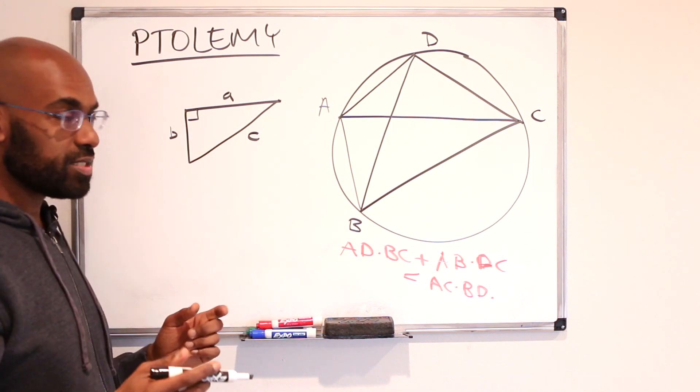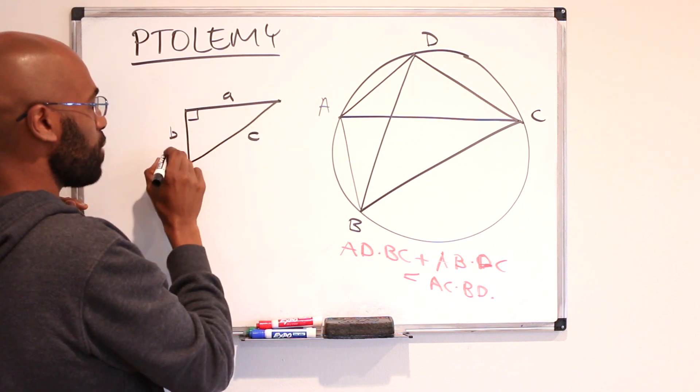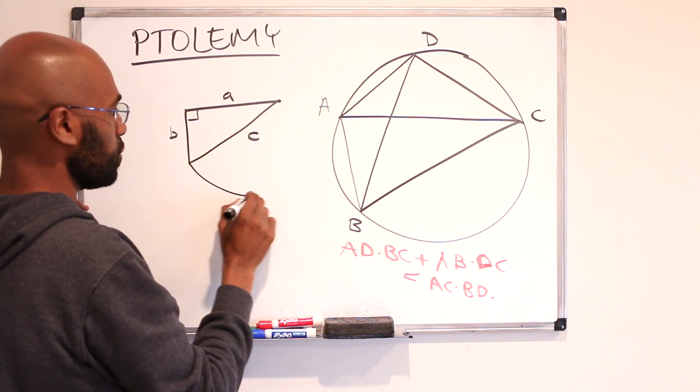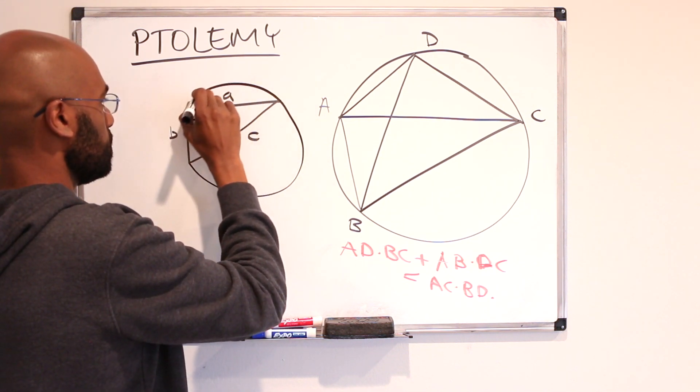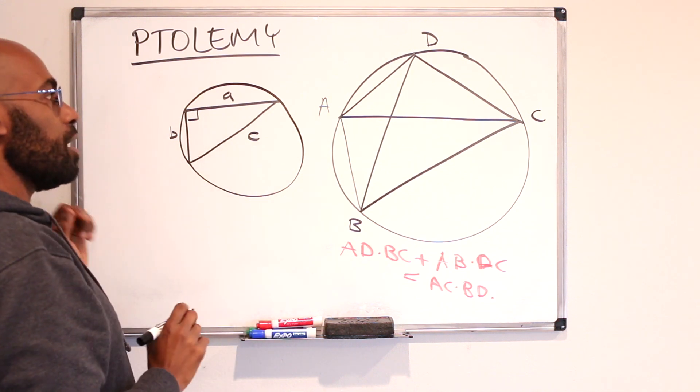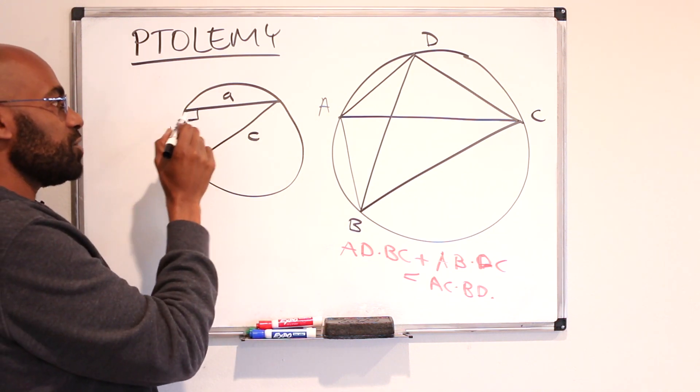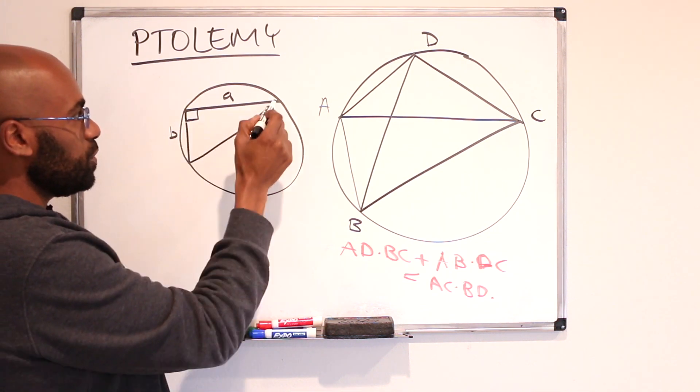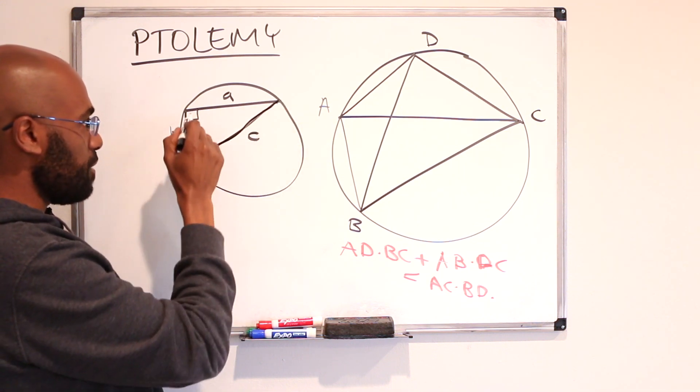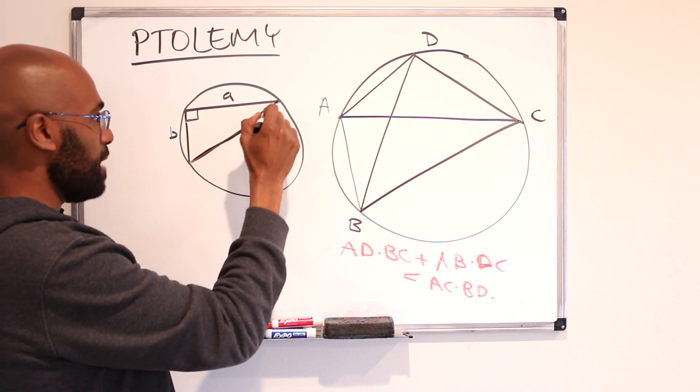We can actually see this as a consequence of Ptolemy's. What we'll do is inscribe this inside of a circle. This looks something like this. Now this is a right angle over here. What we'll do is because this is a right angle, this thing has to be a diameter.